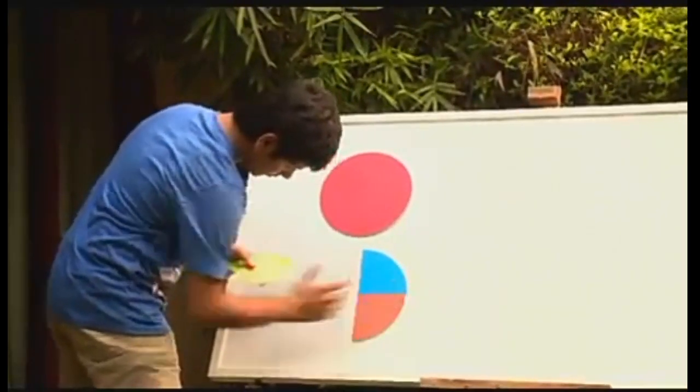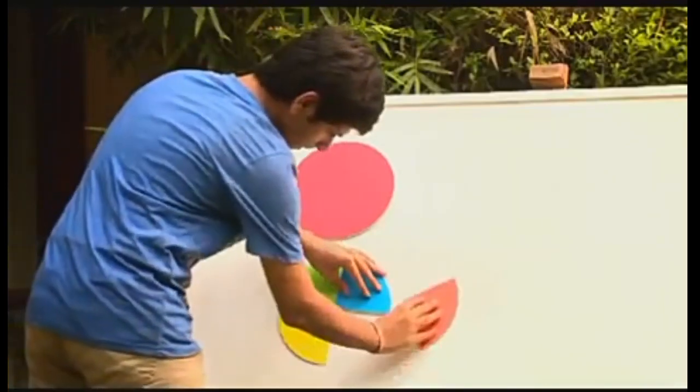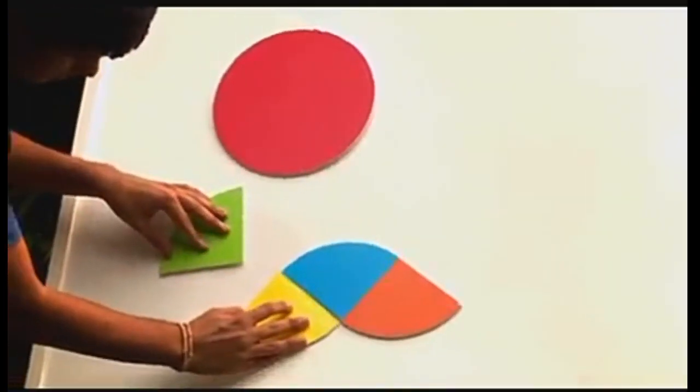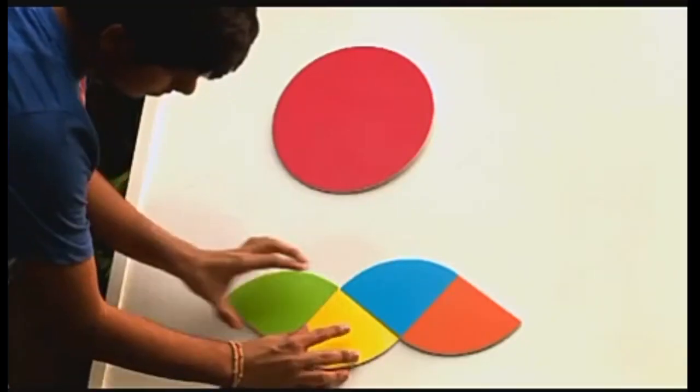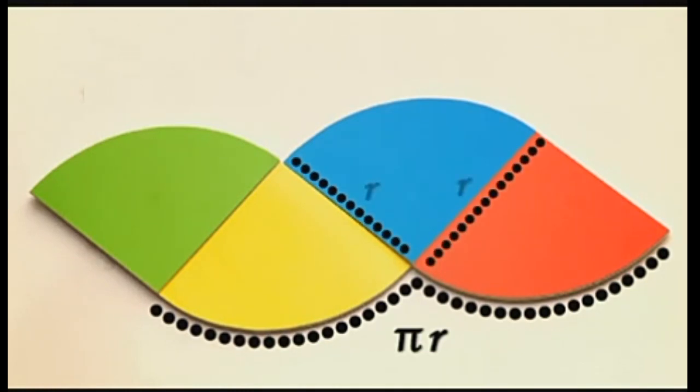To figure this out, Shivish constructs a circle with four quarters. He then rearranges the quarters like this. Now if we consider that the circumference of a circle is 2πr, then the length of the scalloped edge at the bottom is πr, which is half the circumference of the circle, and this side is the radius of the circle, which is r.